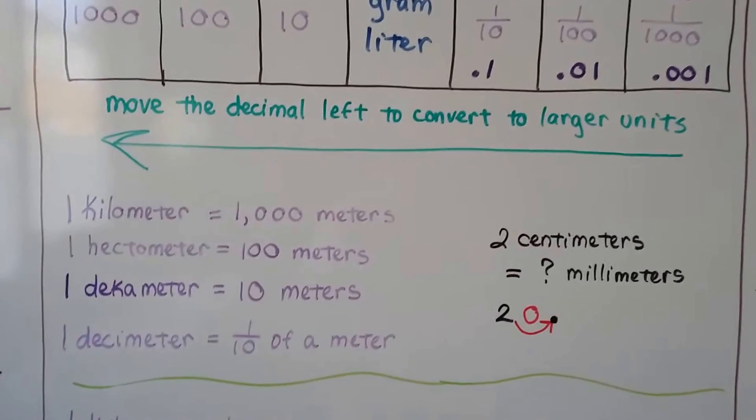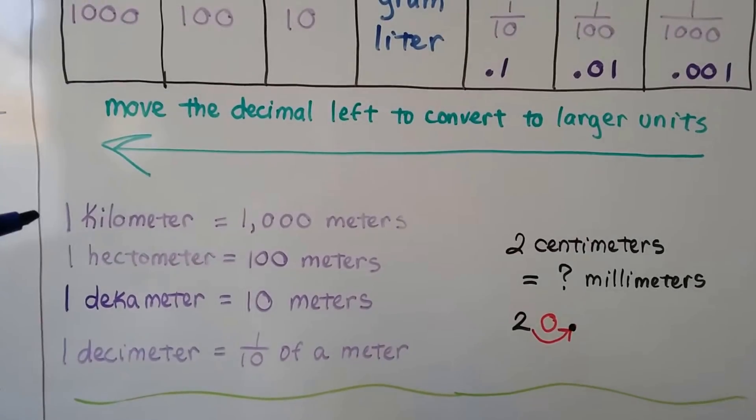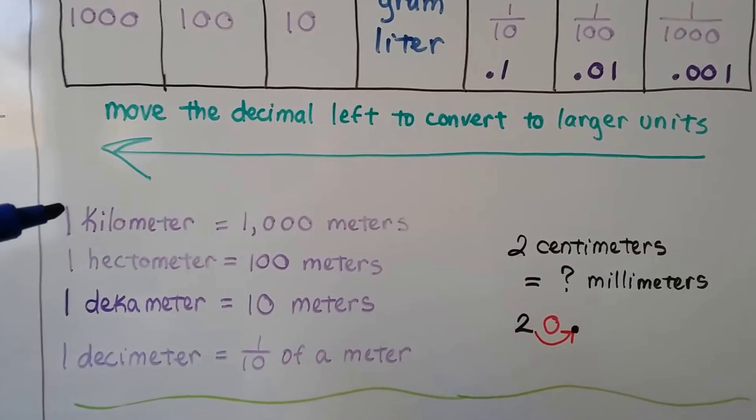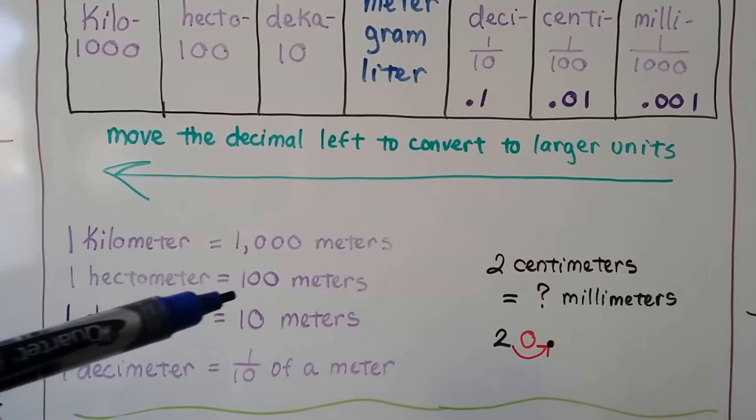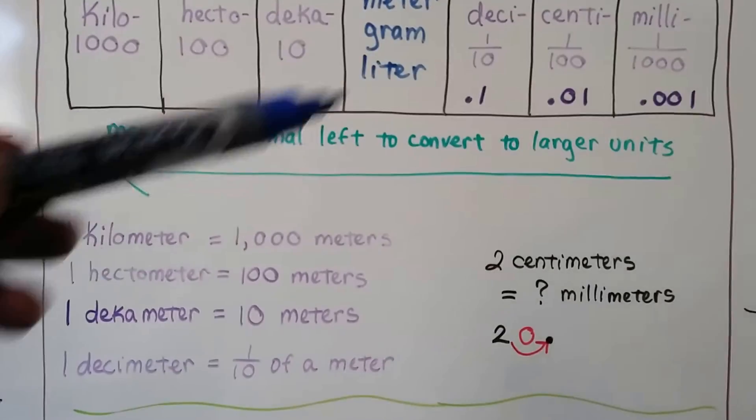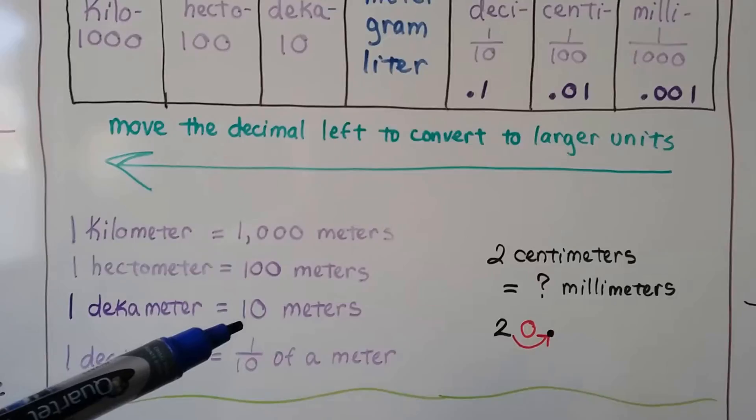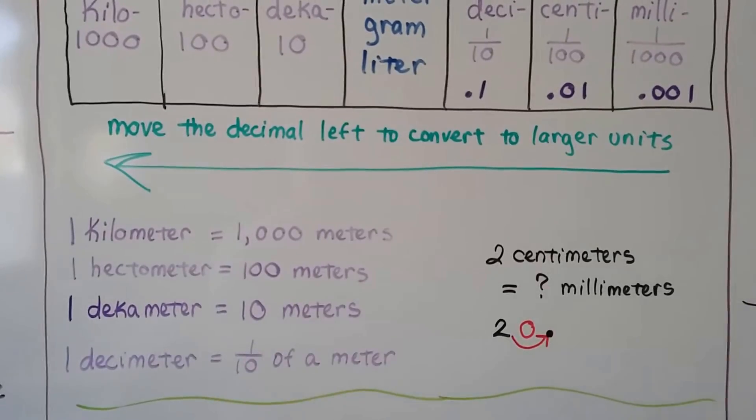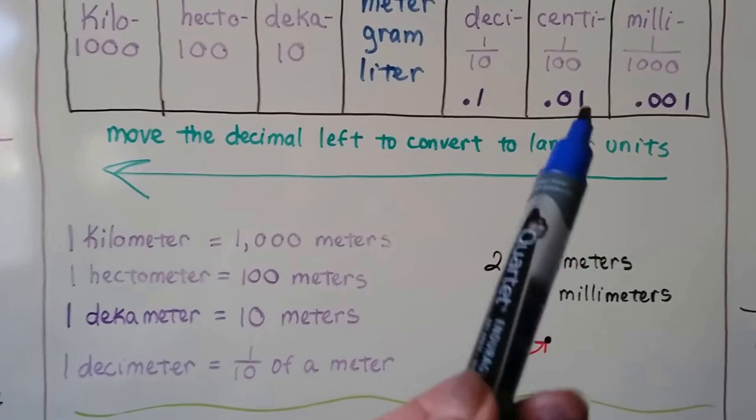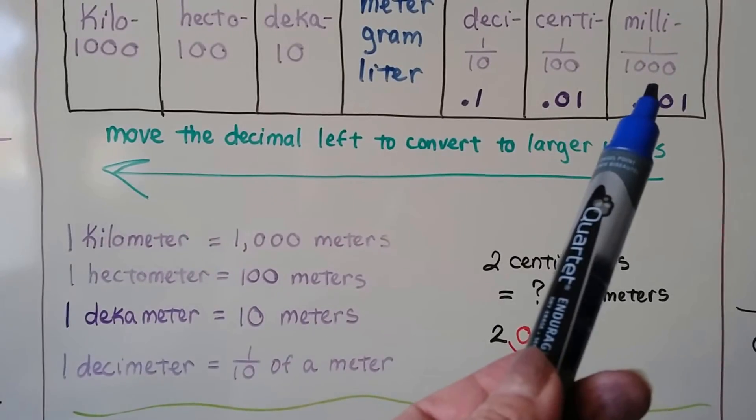So for meters, here's a few of them. One kilometer is one thousand meters. A hectometer is one hundred meters. A decameter is ten meters. And a decimeter is one tenth of a meter. Centi would be one hundredth. This would be one thousandth of a meter.